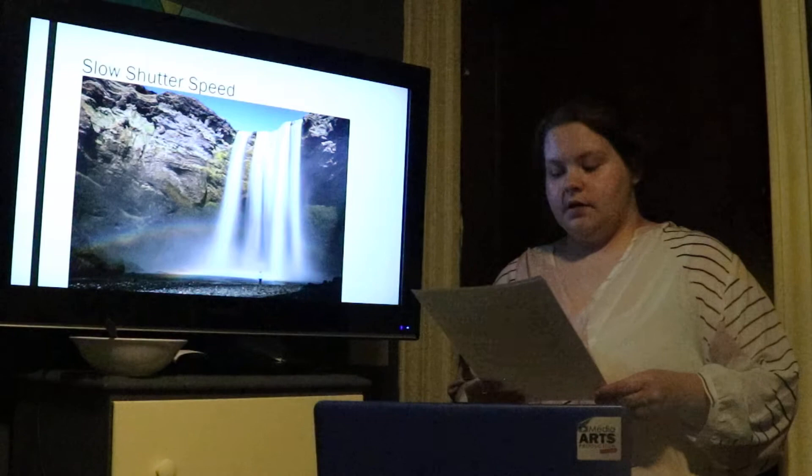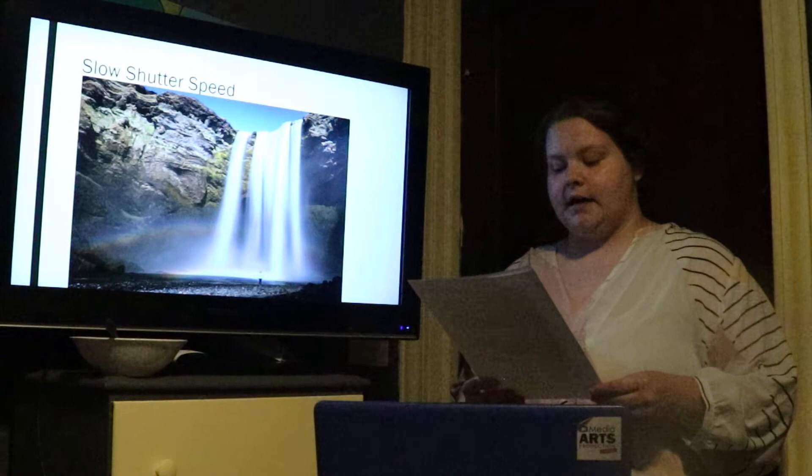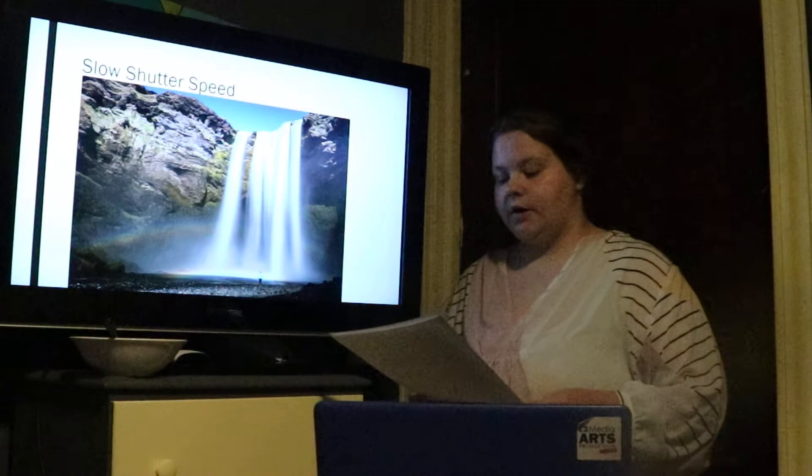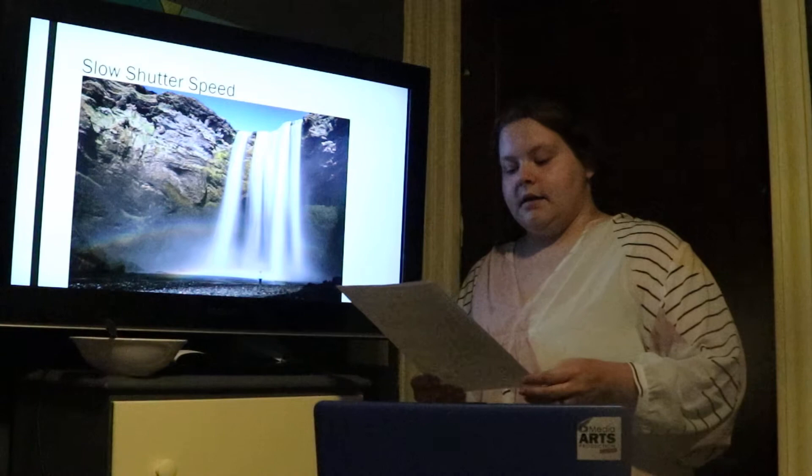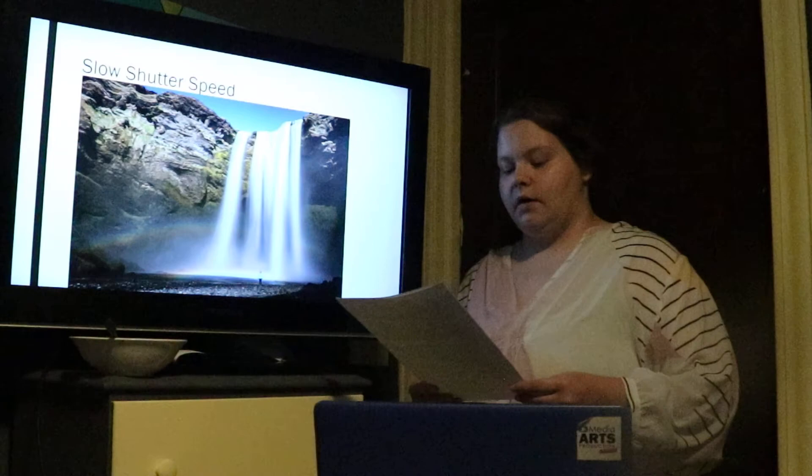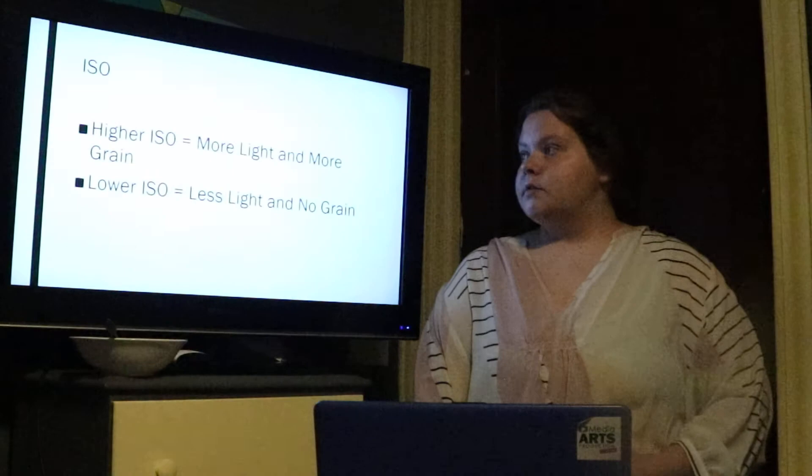Now to put it all together: first, I'm going to evaluate my scene to set my ISO. If I'm outdoors with plenty of light, I'm going to bring that ISO as low as I can. Second, I'm going to look at my subject and set my aperture based on that. Third, I'm going to choose how much motion blur I want or don't want and set my shutter speed based on that.